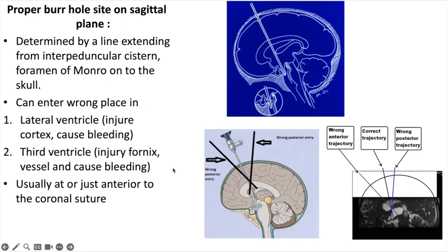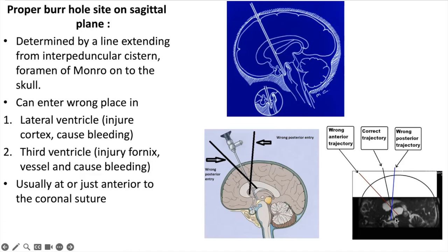One can enter at a wrong place in the lateral ventricle. The correct entry leads to the lateral and third ventricle, but entering too posteriorly or anteriorly and then moving to reach the foramen of Monro can injure the cortex. A wrong trajectory in the third ventricle — too anterior or posterior — means that moving the scope to correct it can injure the fornix and vessels, causing bleeding.